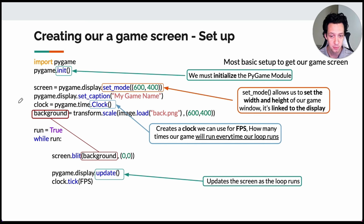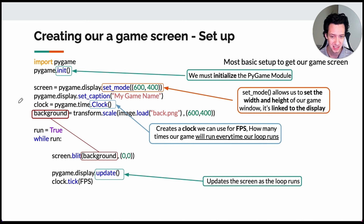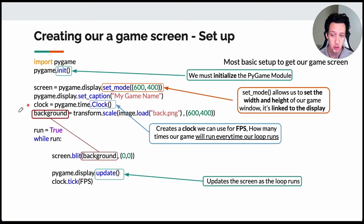After creating the screen and set_caption, create a clock. This is different from the time module — Pygame needs an FPS. FPS stands for frames per second: how many frames your game goes through every second. Movies typically run at 24 FPS; action sports can go up to 60 FPS. For Pygame games, I typically choose around 40 to 60 FPS. By creating a clock object, you can use it later in your code.